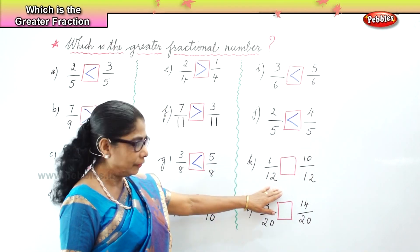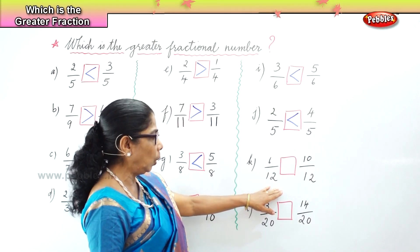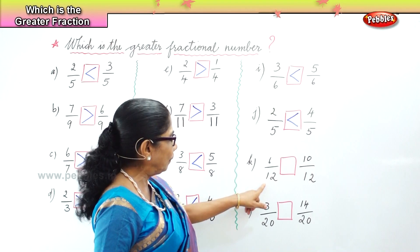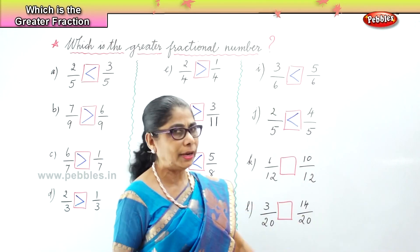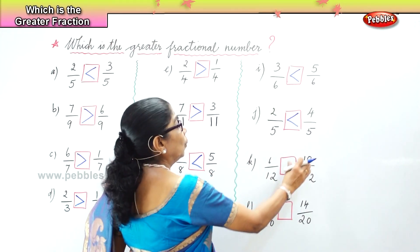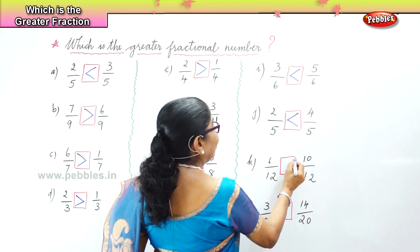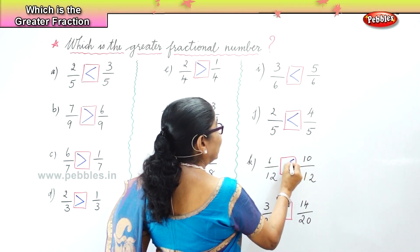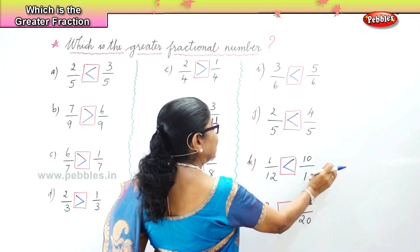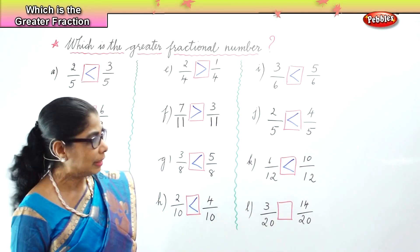Here you have the denominator twelve. The whole is divided into twelve parts — six by twelve and ten by twelve. Let's look at the numerators. Ten is bigger than six. Therefore, ten by twelve is greater than six by twelve.